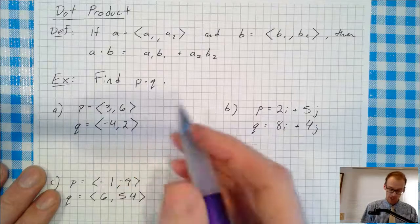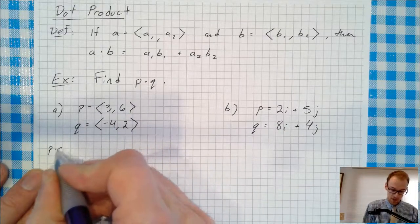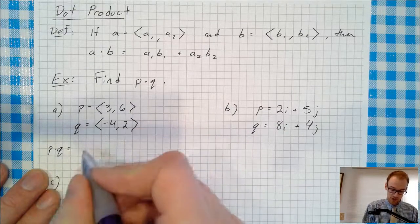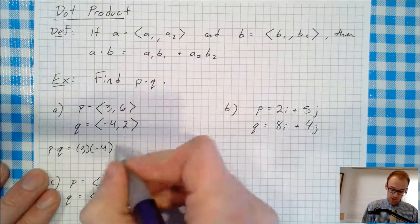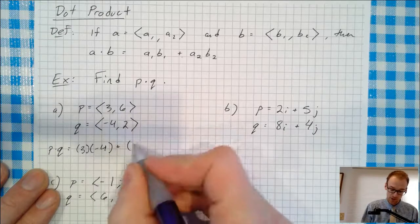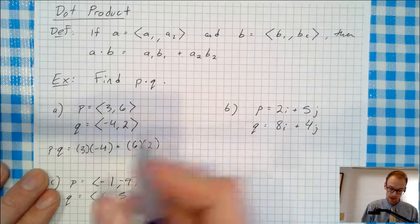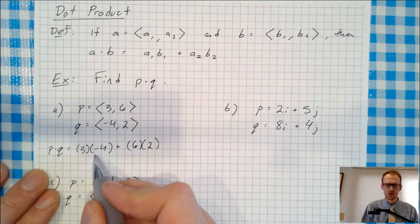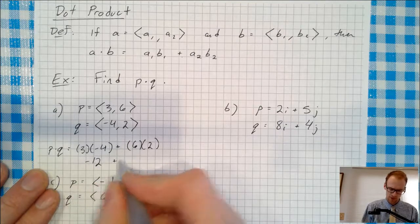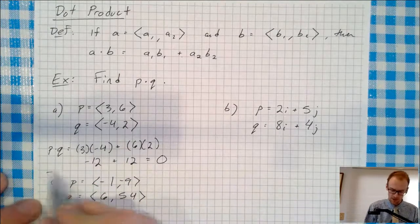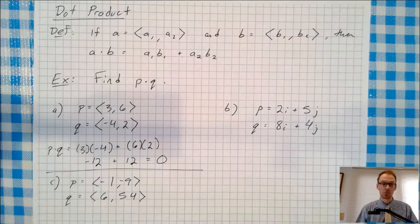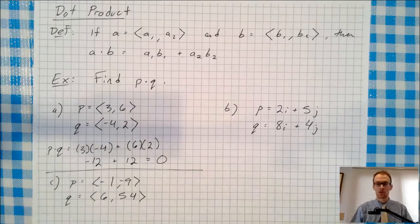So here our x components are 3 and negative 4. So let's write P dot Q equals 3 times negative 4 plus 6 times 2. 3 times negative 4, that's negative 12 plus positive 12. That equals 0. That vector has a product, a dot product, those vectors P and Q have a dot product of 0.